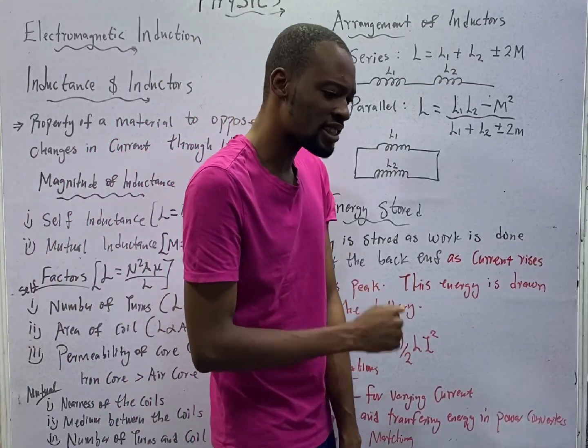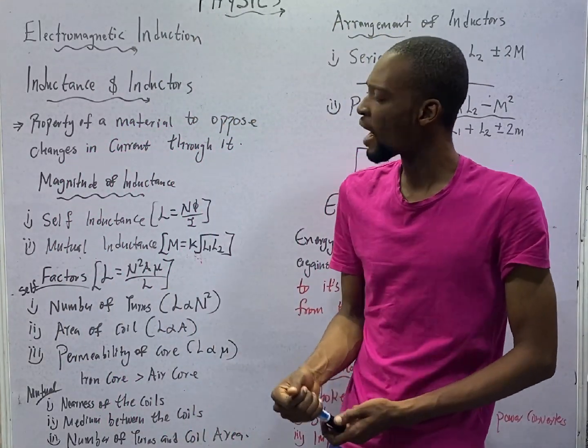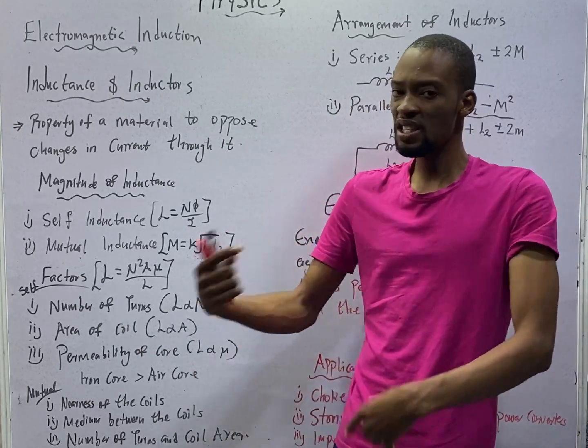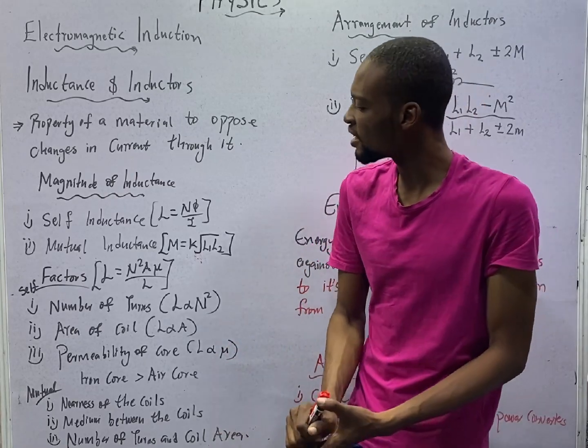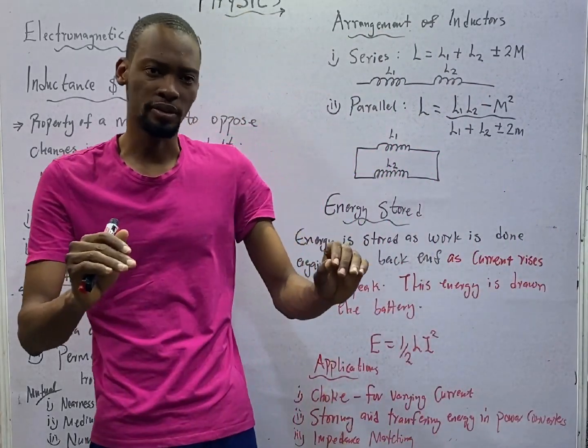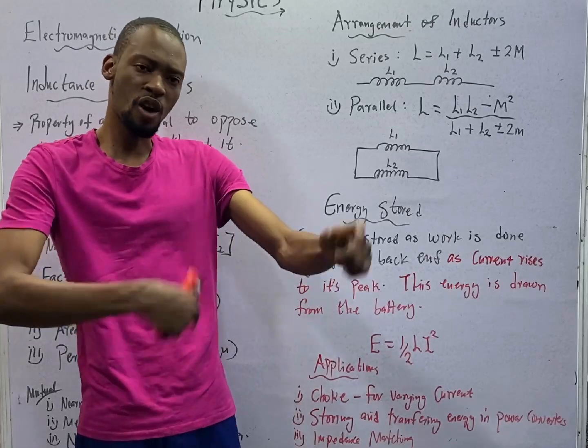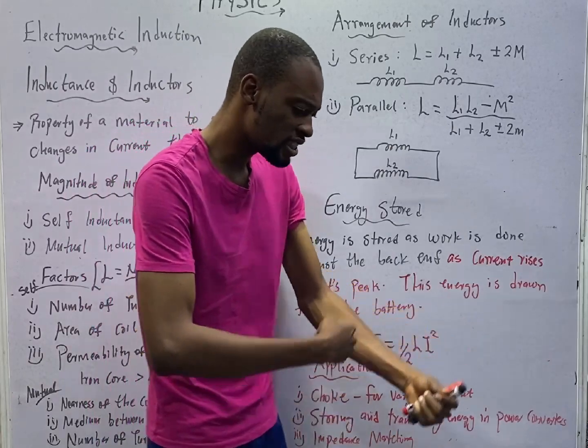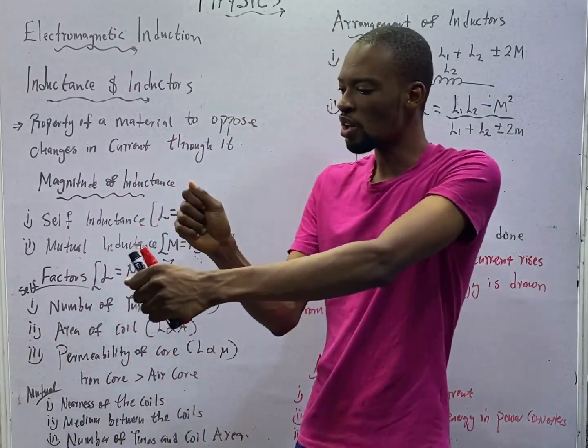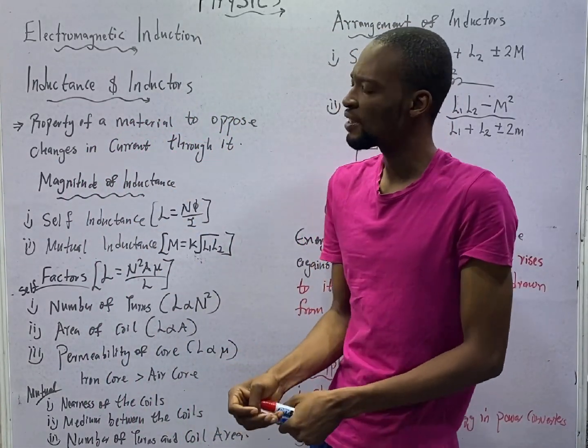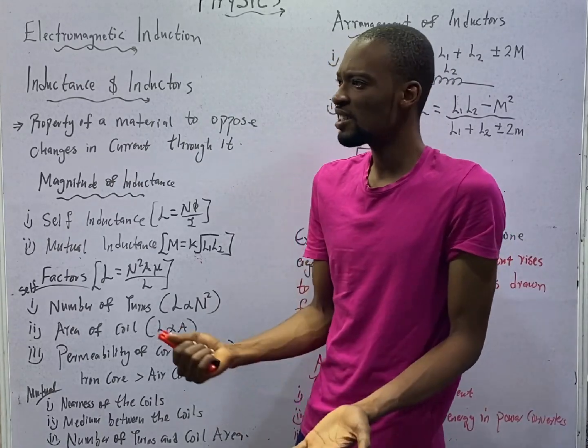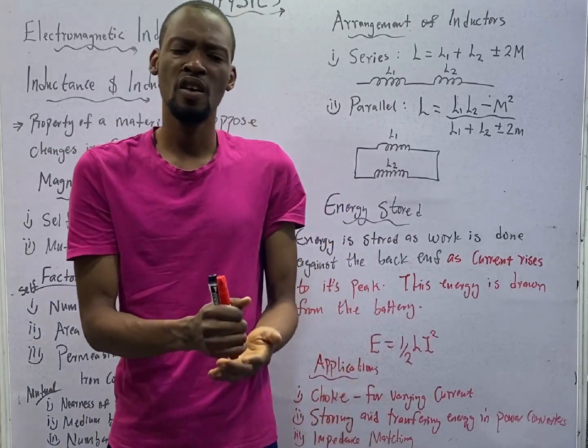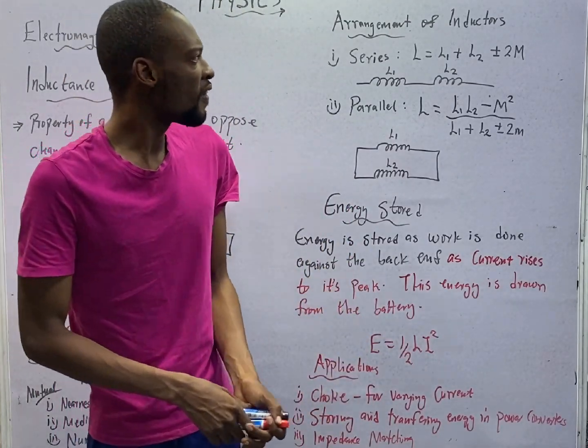When you start a generator for the first time, it produces more power than when it is already running. Because it has to spin very fast to be able to maintain or get a particular revolution of the coil. You see the coil spinning to generate EMF. Remember, when there is an oscillating motion between a conductor and a magnetic field, EMF is induced. And if current is not flowing, EMF is the same thing as potential difference or voltage.